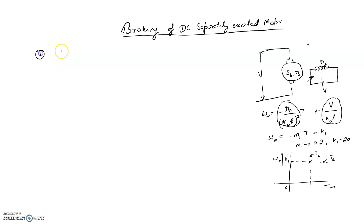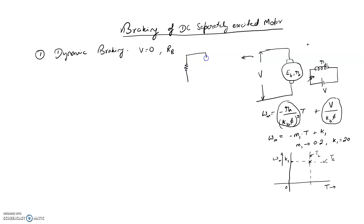Let us start with dynamic braking. For dynamic braking, what we do is remove the supply voltage — set V equal to 0 — and to make the circuit complete, add another resistance RB. Redrawing the circuit, RB is an extra resistance added with the armature. We just remove the supply terminal and add resistance RB. The current direction and RA remain as before. Try to use a variable RB for more effectiveness.